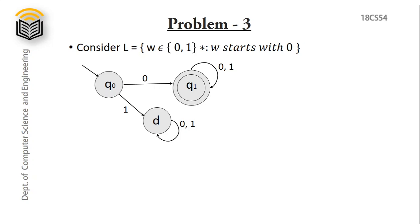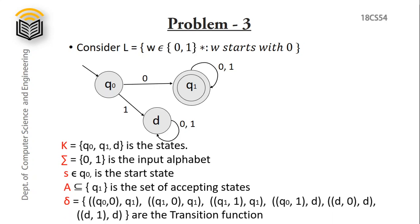5-tuples for complete FSM: K has 3 states, q0, q1, and d. Sigma is 0 and 1. S is starting state q0. A contains only accepting state q1. Transition function: q0 upon 0 goes to q1; q1 upon 0 remains in q1; q1 upon 1 remains in q1; q0 upon 1 goes to dead state d; and d upon 0 or 1 remains in d.